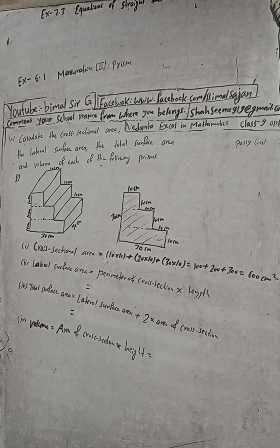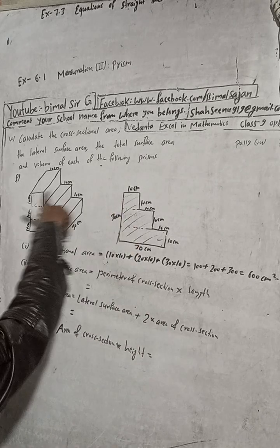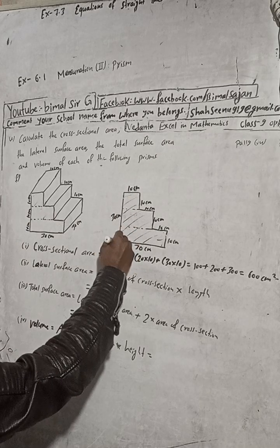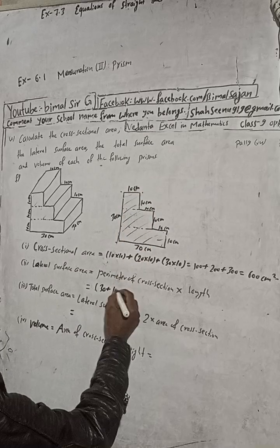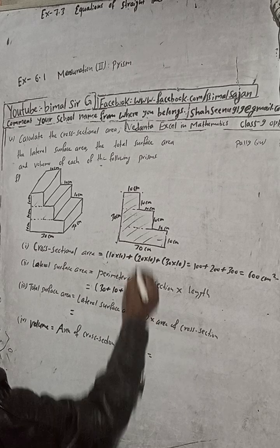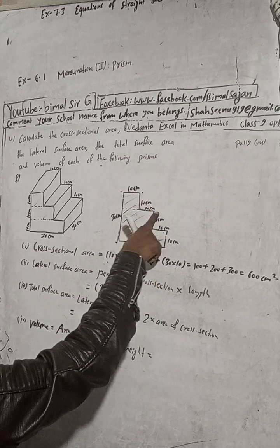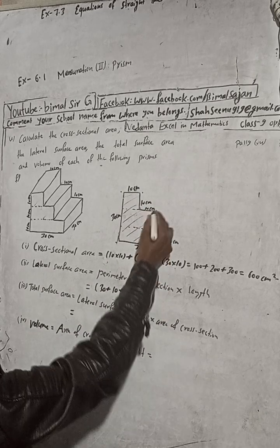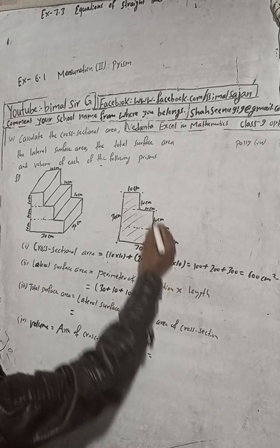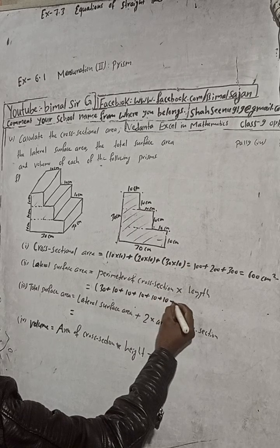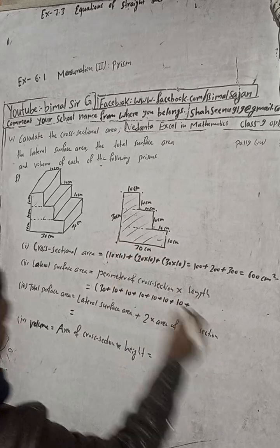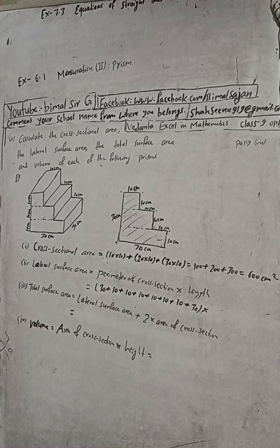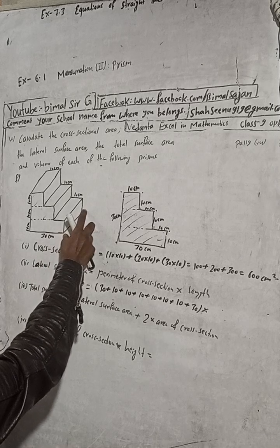Now lateral surface area formula is: perimeter of cross-section times length. So let's trace the cross-sectional perimeter. From here to here is 30 cm, plus from here to here is 10 cm, and here to here is another 10 cm. Here to here is 10, up to here is 10, and again up to here is 10 cm. And this is 10 cm, and this is 30 cm.